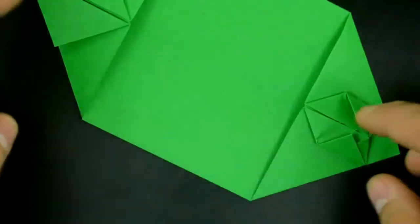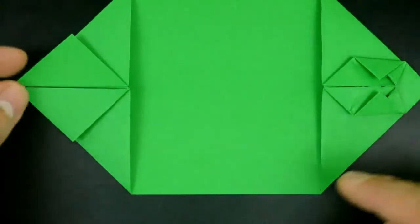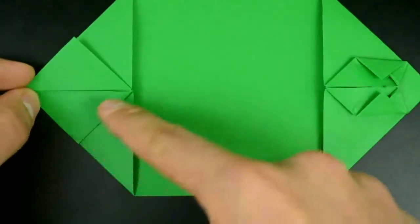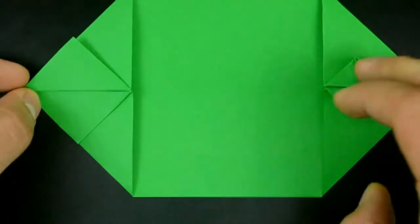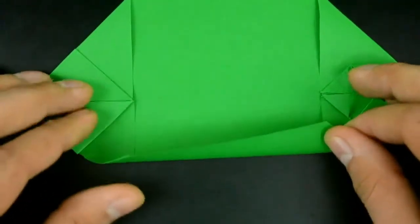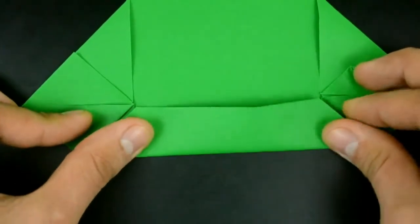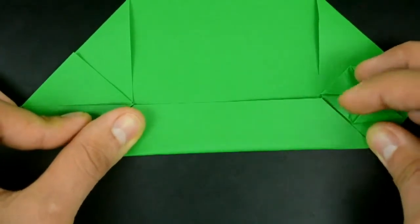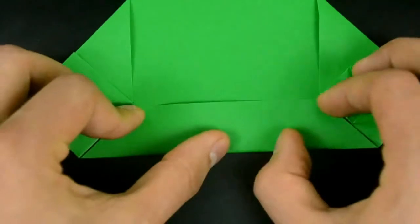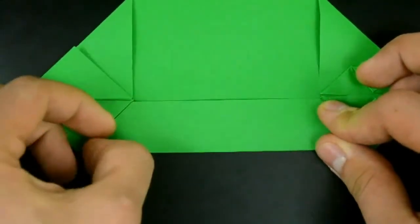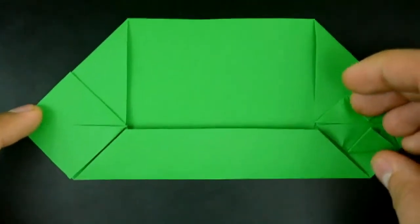Now rotate the paper. Fold the bottom edge to the middle, aligned with the last folds. Just watch and repeat. Rotate the paper and repeat on the other side.